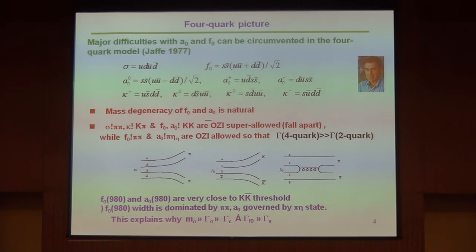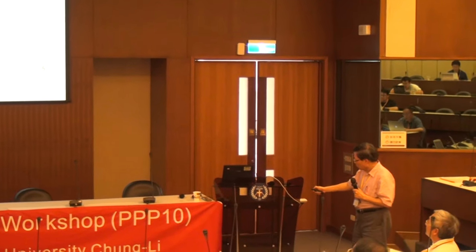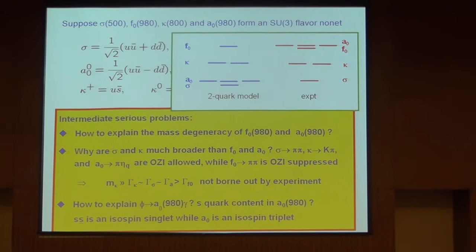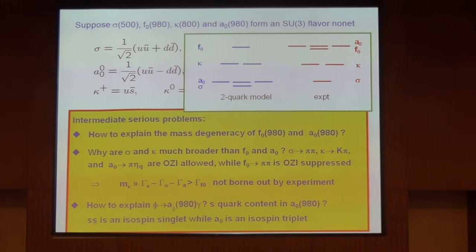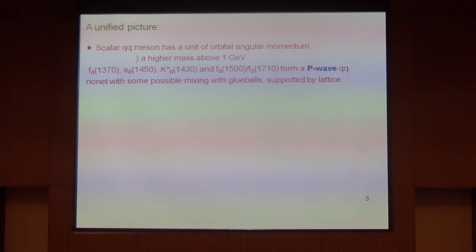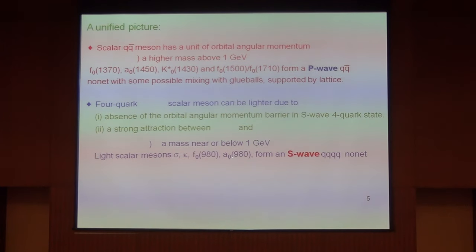So in those states f₀(980), a₀(980) already measured in the 1970s. A unified picture emerged, namely that the heavy scalar mesons like f₀(1370) and a₀(1320) are P-wave qq̄ states, and for the light scalar mesons like sigma, kappa, a₀(980), f₀(980), they are S-wave four-quark states. This unified picture is almost widely accepted in the community.